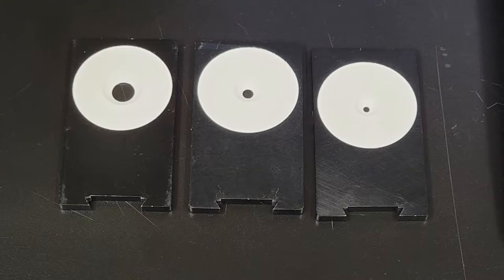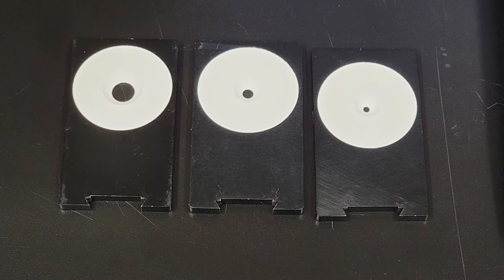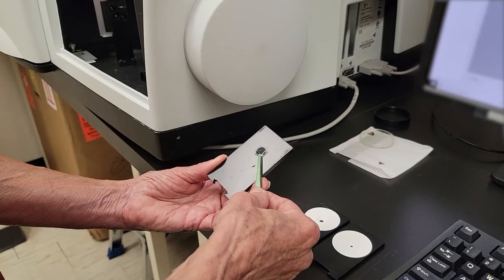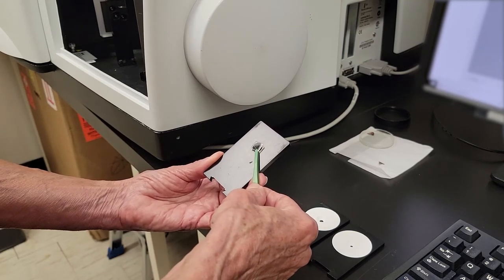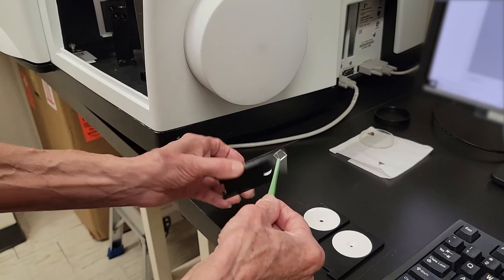We have three aperture masks to choose from. We need to use the mask with an aperture as large as possible but smaller than the sample to get optimal signal. You can see that this sample does not cover the full opening of the largest mask, so we need to move down to a smaller mask.